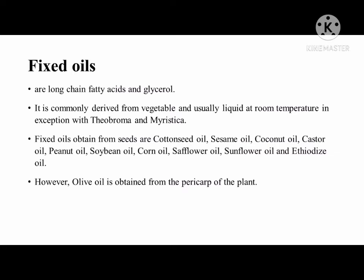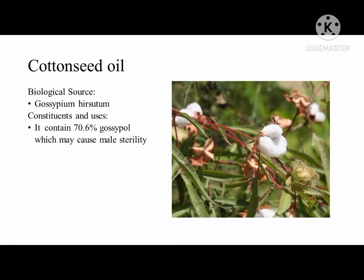However, olive oil is obtained from the pericarp of the plant. The first example is cottonseed oil with biological source Gossypium hirsutum. It contains 70.6% gossypol, which may cause male sterility.